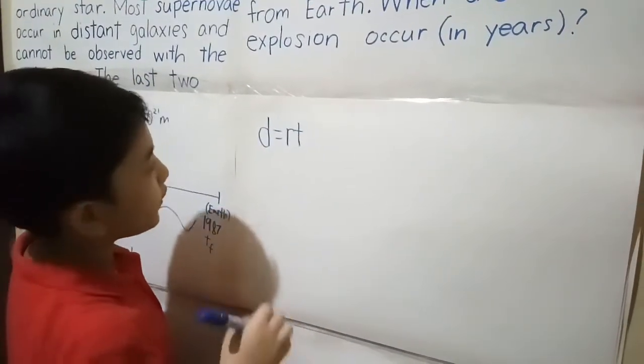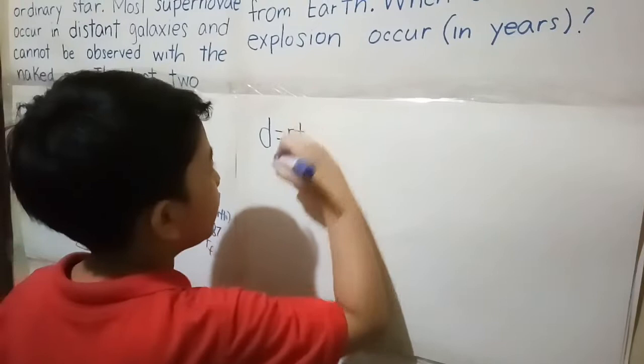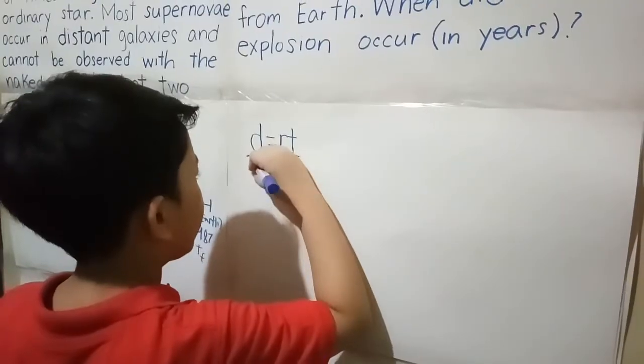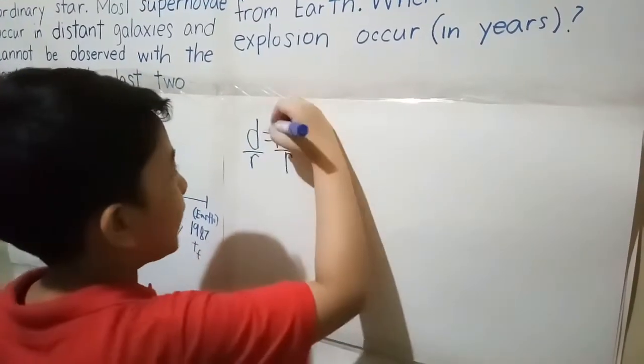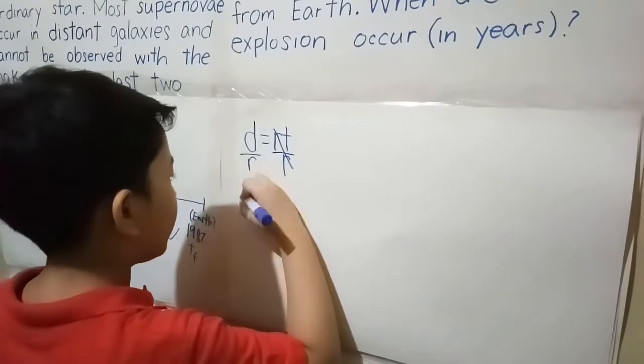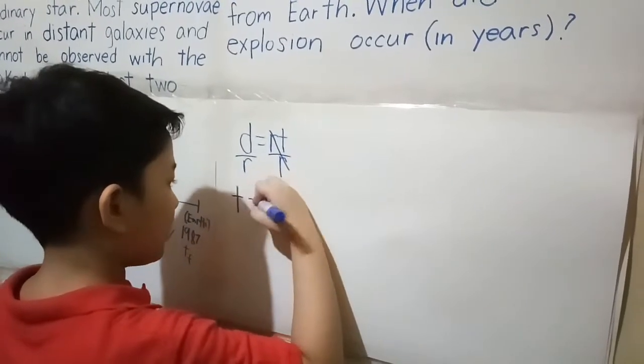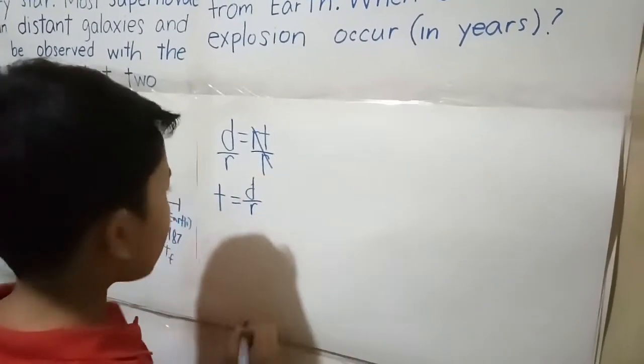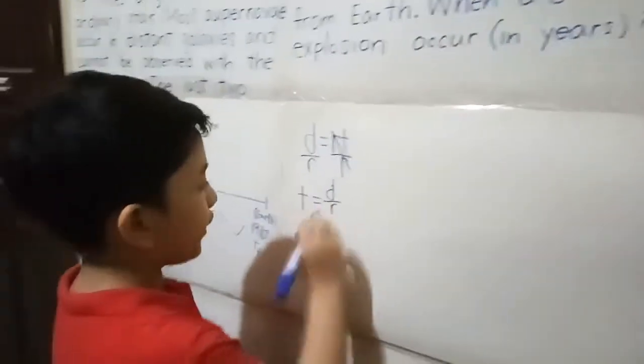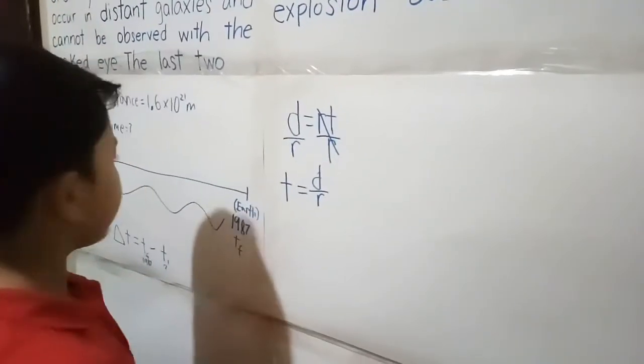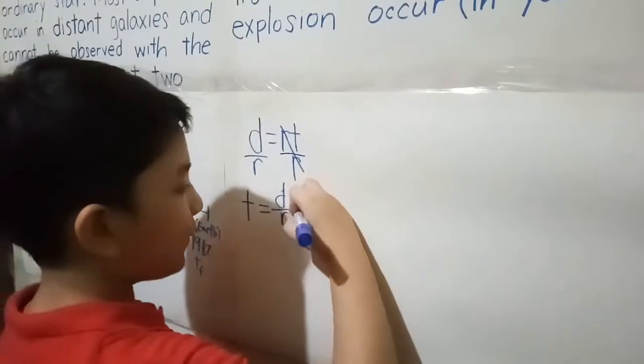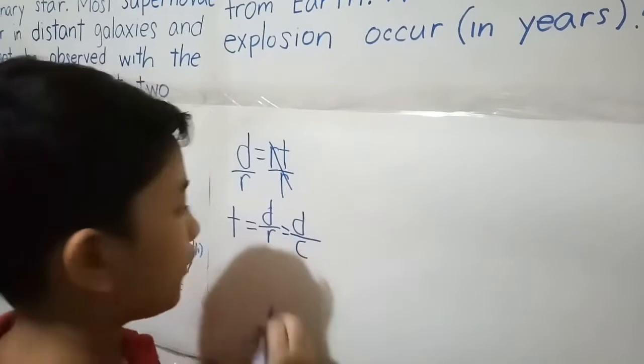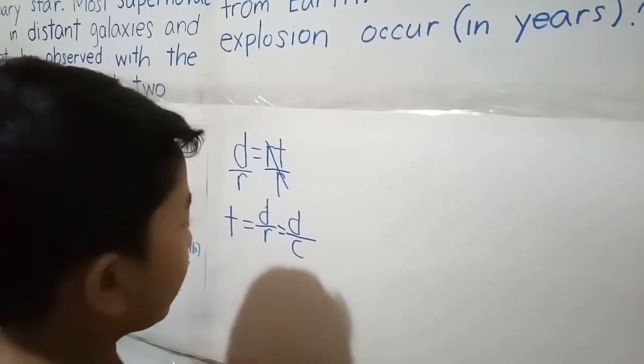To isolate time, we should divide both sides by rate. Cancel the rates, and we have T equals distance over rate or speed. We are not just using any rate or speed, we are using the speed of light. With the speed of light, this equation becomes T equals D over C. C means celeritas, Latin for speed.